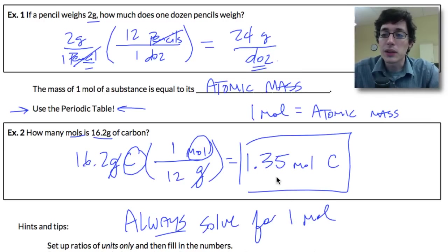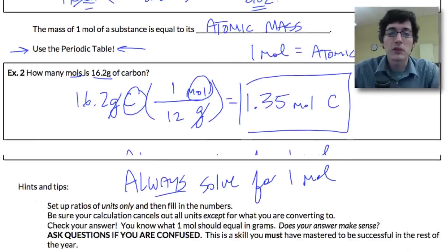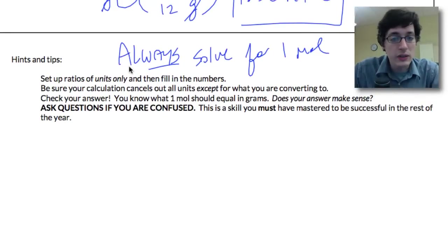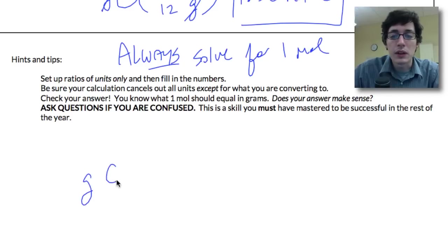And then you've got to find the mass that goes with that. So a few tips down here at the bottom. First of all, set up ratios of units only and then fill in the numbers. So if we were going to do this one again, we're starting with grams of carbon and we need a conversion factor. So I want to cancel out grams and change to moles, and then we fill in our numbers from there. So we had 16.2, 1 mole, 12 grams per mole.